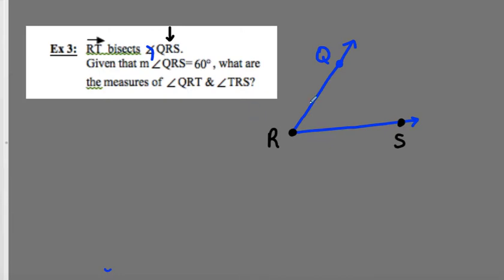Then it says RT bisects it, so I'm going to draw a ray in it, I'm going to put a T on it, it bisects it, so I'm going to mark the two angles congruent to each other. So I make those little arcs and put the hash mark. Then it says given that measure of QRS is 60 degrees, so the whole angle is 60 degrees, what are the measures of QRT and TRS? Well, if they're equal, then I take 60 and I divide it by 2, and I'm going to get 30 degrees. So each of these angles is 30 degrees.